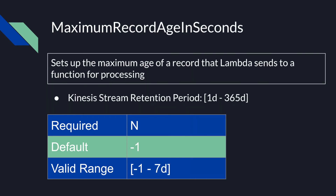Maximum record age in seconds: this parameter sets the maximum age of a record that Lambda sends to a function for processing. It's not a required parameter. The default is -1, which sets the maximum age to infinite. When the value is set to infinite, Lambda never discards records, so records will be visible according to the Kinesis stream retention period, which is 1 day to 365 days. The valid range for this parameter is -1 to 7 days.